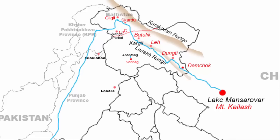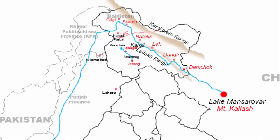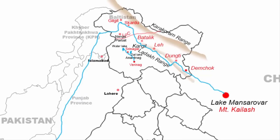The Jhelum River flows in the north-western direction towards the capital city of Srinagar. After passing through Srinagar, it flows into Wular Lake. Here is Wular Lake, here is Srinagar, and here is Dal Lake. The river then flows in the western direction and heads towards the Baramulla district of J&K. After passing through Baramulla, it crosses the town of Uri.